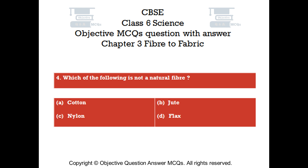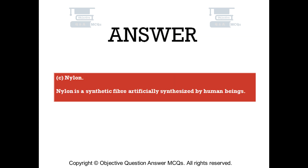Question number 4. Which of the following is not a natural fiber? Option A: cotton. Option B: jute. Option C: nylon. Option D: flax. The right answer is option C — nylon. Nylon is a synthetic fiber artificially synthesized by human beings.